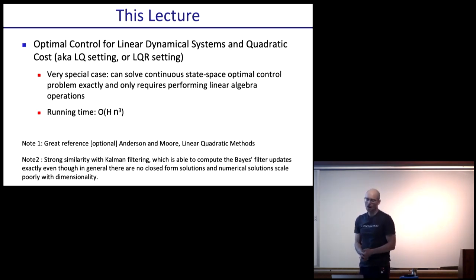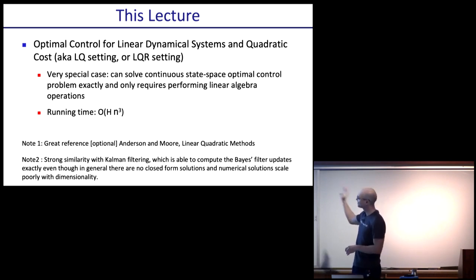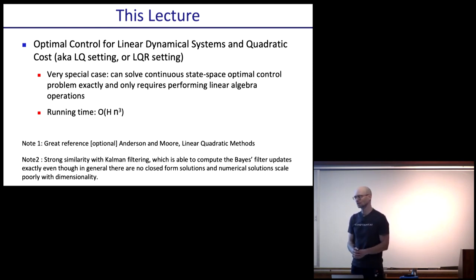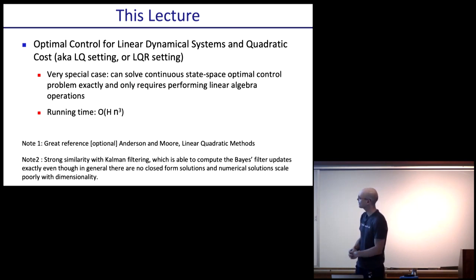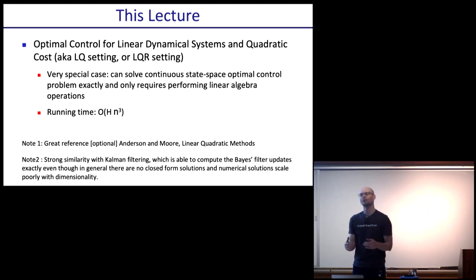In this lecture, we'll look at optimal control for linear dynamical systems and quadratic costs — the LQR, or linear quadratic regulator, setting. It's a very special case where we can solve continuous state space optimal control exactly. It only requires linear algebra operations, which are tractable with matrices of the state space dimension. Runtime will be order H times N cubed. There's a great optional reference: a book by Anderson and Moore, Linear Quadratic Methods, which is a tutorial-style introduction to this topic.